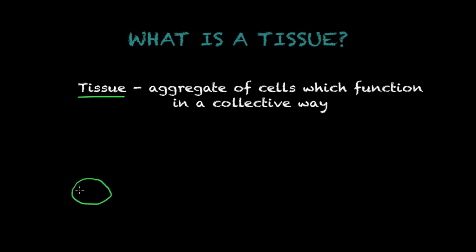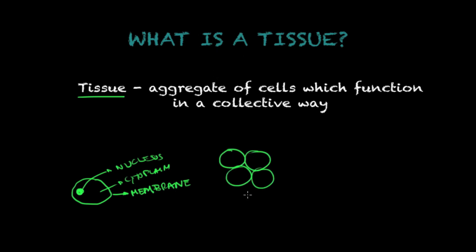Say if I have a cell here — a poorly drawn cell, but it gets the job done. So a membrane here with a cytoplasm and my nucleus here — this is my cell. So if an aggregate of cells, or a group of cells, come together to function towards the same purpose, whatever it might be, this is going to be called a tissue.